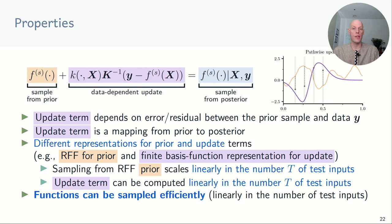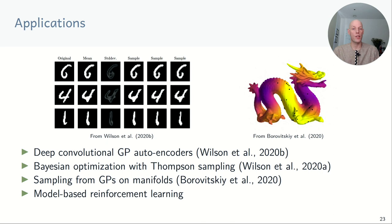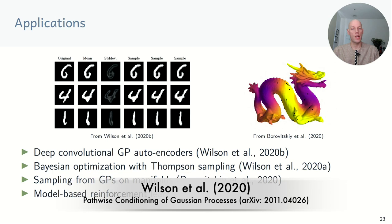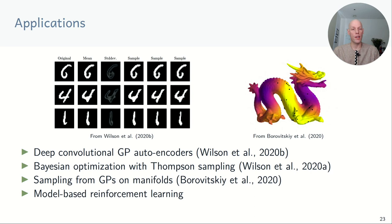Decoupled sampling allows us to efficiently sample functions from Gaussian process posteriors, making it useful in applications that use function samples heavily. For example, when working with deep Gaussian processes we usually rely on sampling for training and inference — here's an example of a deep convolutional Gaussian process autoencoder applied to the MNIST dataset. Another application is Bayesian optimization where we use Thompson sampling as an acquisition function, which directly requires sampling from the Gaussian process. We can also use decoupled sampling for drawing functions from GPs on Riemannian manifolds, and another interesting application is model-based reinforcement learning where we use sample trajectories to compute expected long-term rewards.